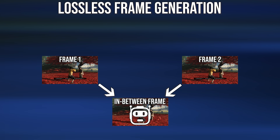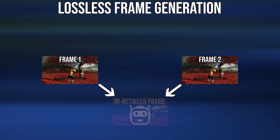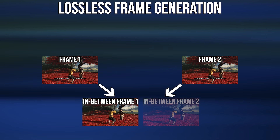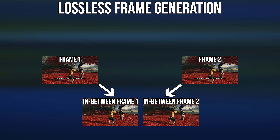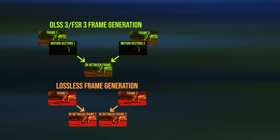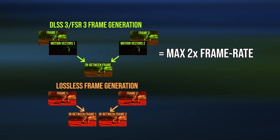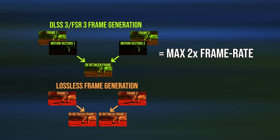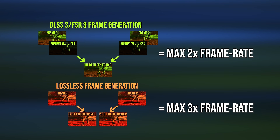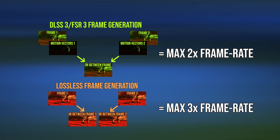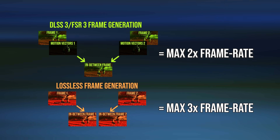With the latest version, Lossless Scaling can generate two in-between frames instead of one, if you choose to. DLSS 3 and FSR 3 currently can only generate one in-between frame, so at max they can double your frame rate. Lossless Scaling can amplify frame rates by up to three times since it's generating potentially two in-between frames.